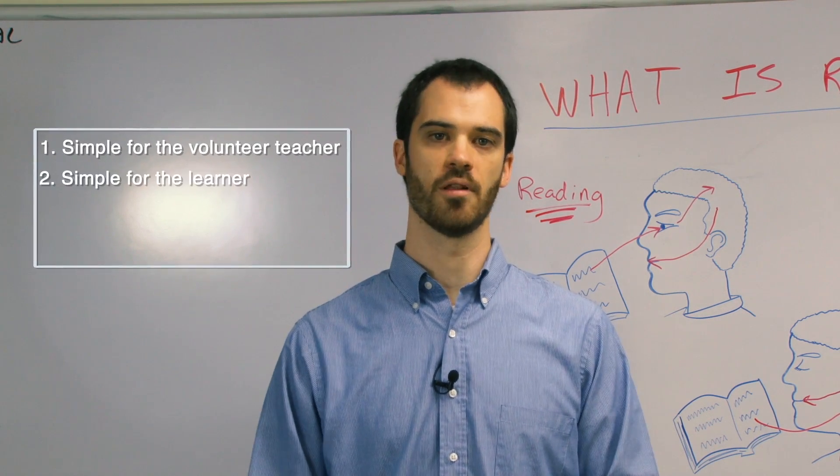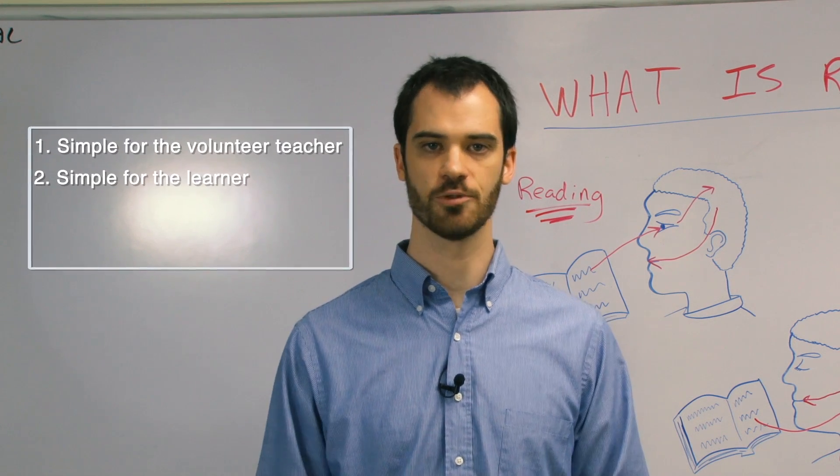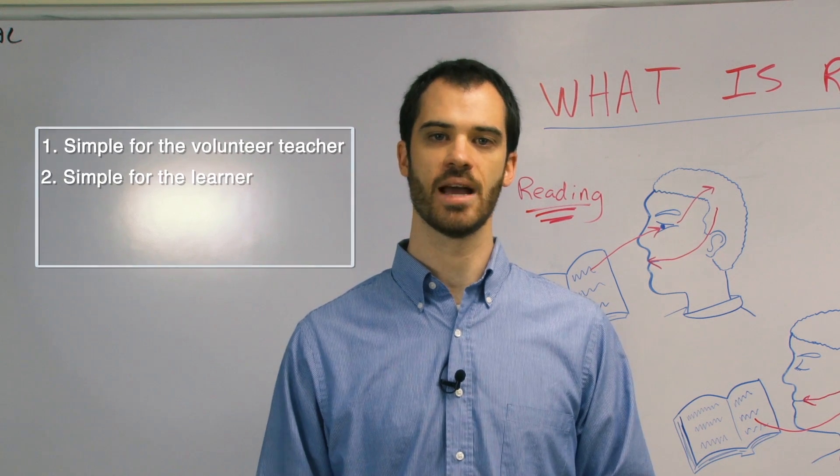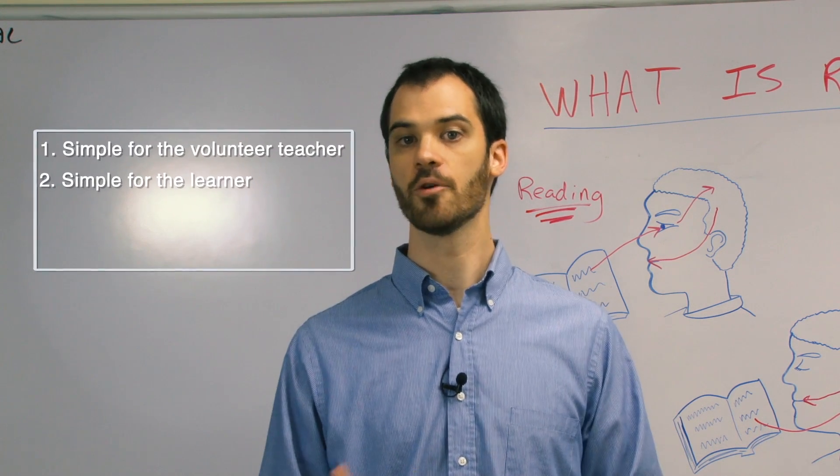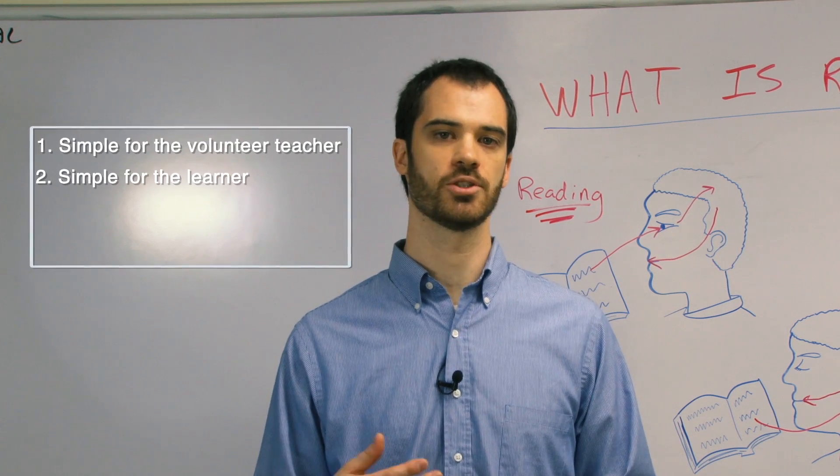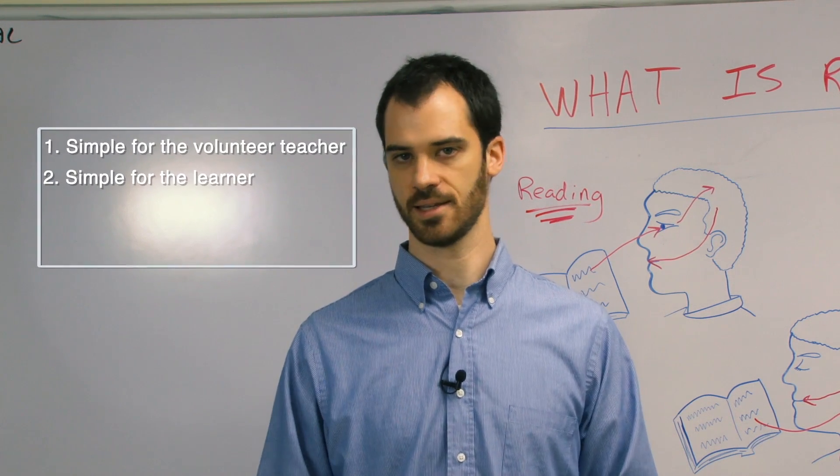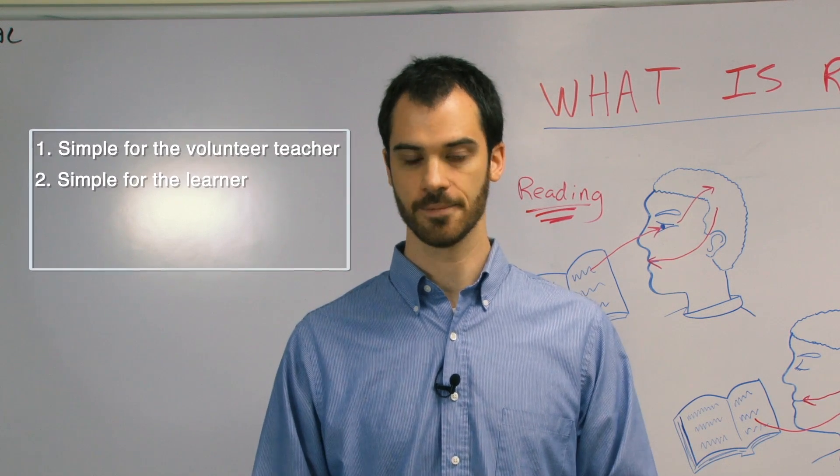Number two, it's simple for the learner. In the very first lesson, the student is learning how to read actual phrases and simple sentences. This method is easier and more effective and gives a student much more confidence than other methods where students would traditionally be learning the alphabet or simply memorizing things like A, B, C, D, E, F, G, or memorizing the vowels or the consonants to start out.